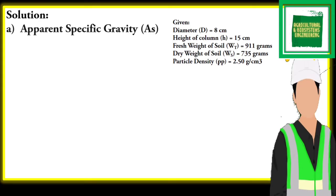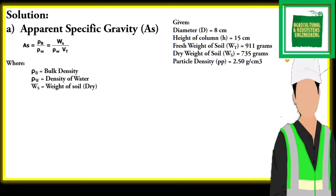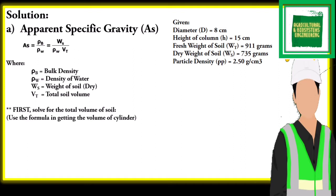The first value that we are going to solve is the apparent specific gravity. We will be using the appropriate formula. First, we solve for the total volume using the formula and substituting the values. The value for the total volume is 753.982 cubic centimeters.